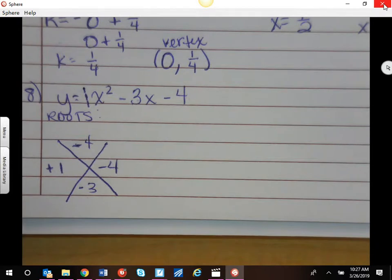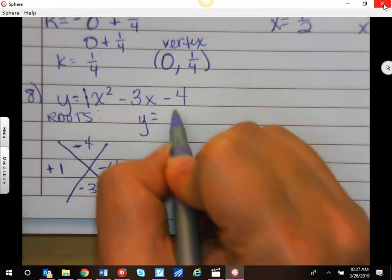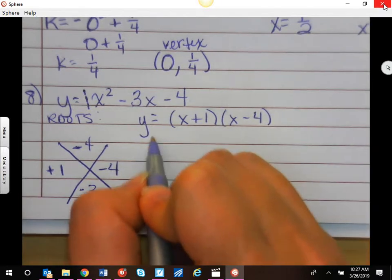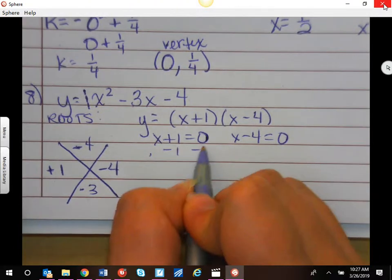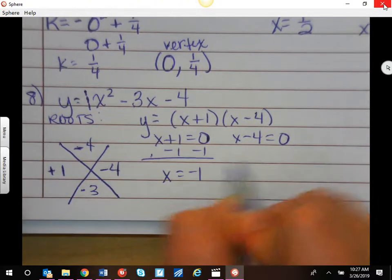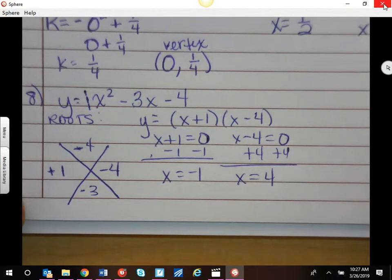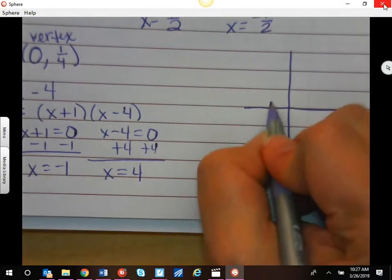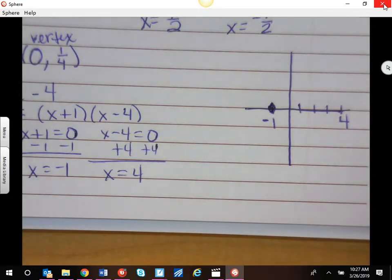So I have y equals x plus 1 and x minus 4. We're going to set these equal to 0, minus 1, x equals a negative 1, plus 4, x equals a positive 4. So on my graph, I'm going to sketch it over here. I have a negative 1 root, 1, 2, 3, 4. And that is what I have so far.